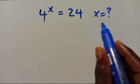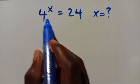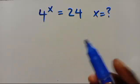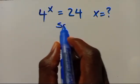What is the value of x given that 4 to the power of x equals 24? Let's have the solution.